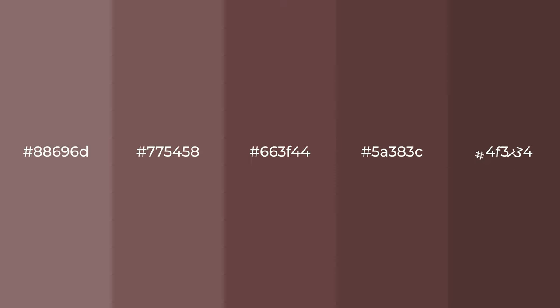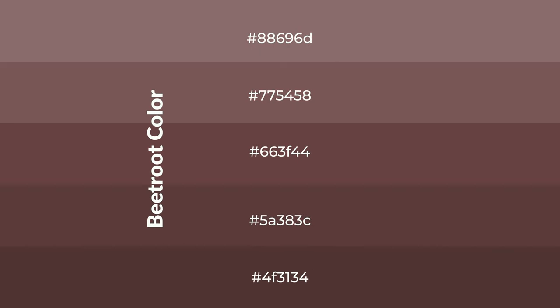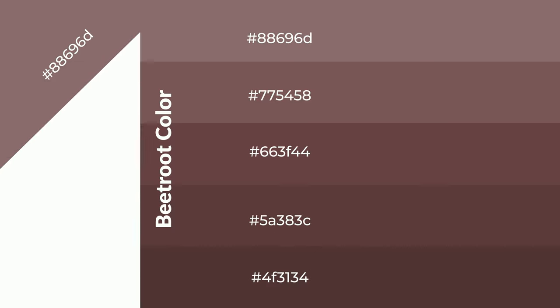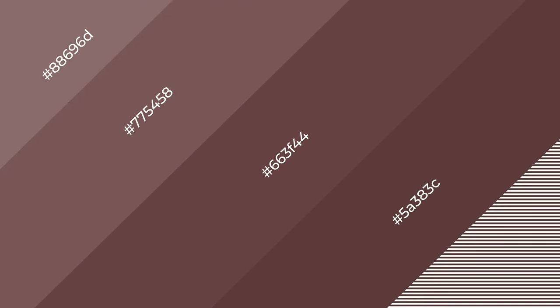Warm shades of beetroot color with red hue for your next project. To generate tints of a color, we add white to the color. Tints create light and exquisite emotions. To generate shades of a color, we add black to the color, and it is used in patterns, 3D effects, and layers. Shades create depth and drama.